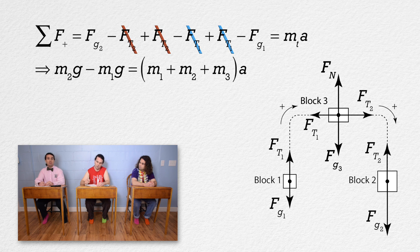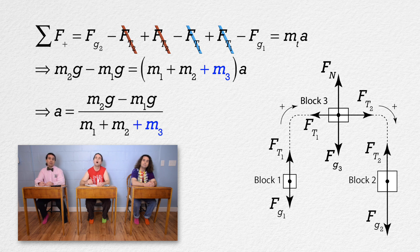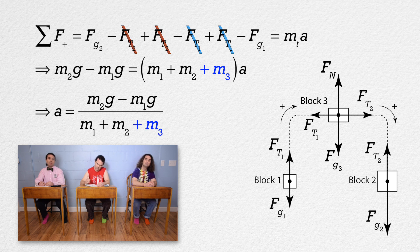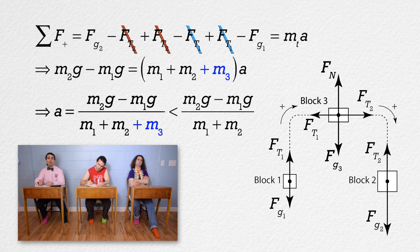So the acceleration expression is almost the same, it just adds the mass 3 in the denominator. Therefore, adding block 3 increases the value of the denominator, which will decrease the acceleration of the block.